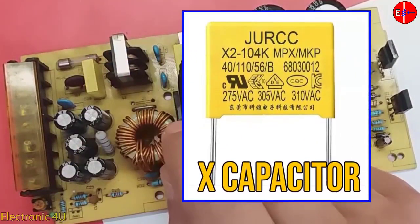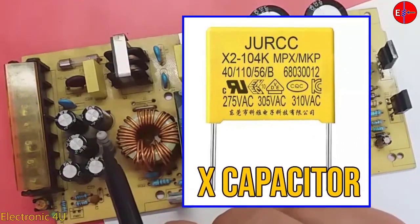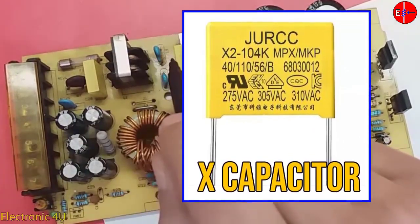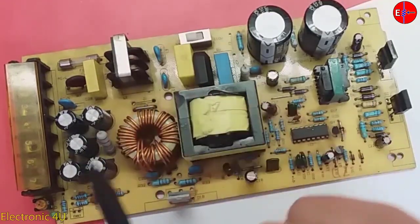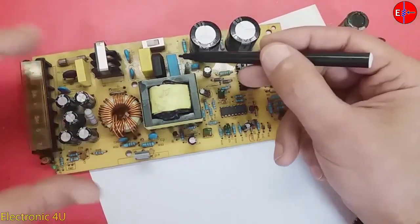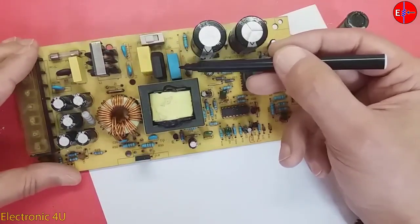This is a disc capacitor or polyester capacitor that does not have a pole. These are X-capacitors which are placed at the beginning of the input of the circuit and are used to remove noise and as a filter. This capacitor is MKT.